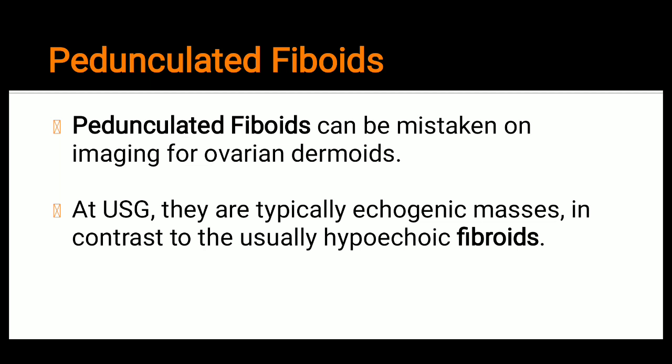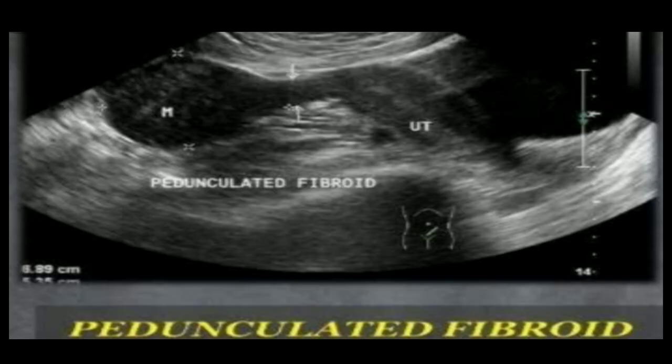At ultrasound, pedunculated fibroids are typically echogenic masses, in contrast to the usually hypoechoic fibroids. You can see these echogenic masses — slightly brighter as compared to the well-defined hypoechoic masses. Due to their specific location, we can identify these as pedunculated fibroids.